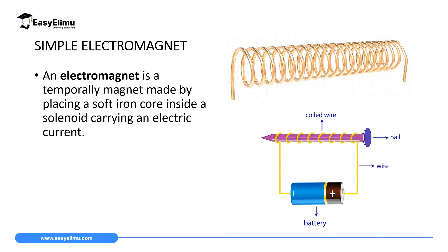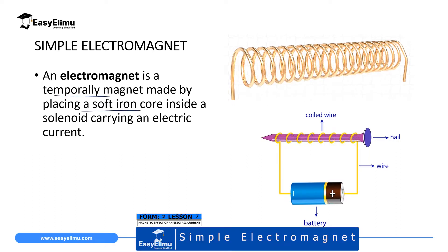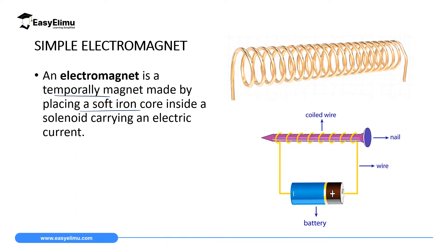The term electromagnet simply means a temporary magnet which is made by placing a soft magnetic material — in this case a soft iron core — inside a solenoid carrying an electric current.